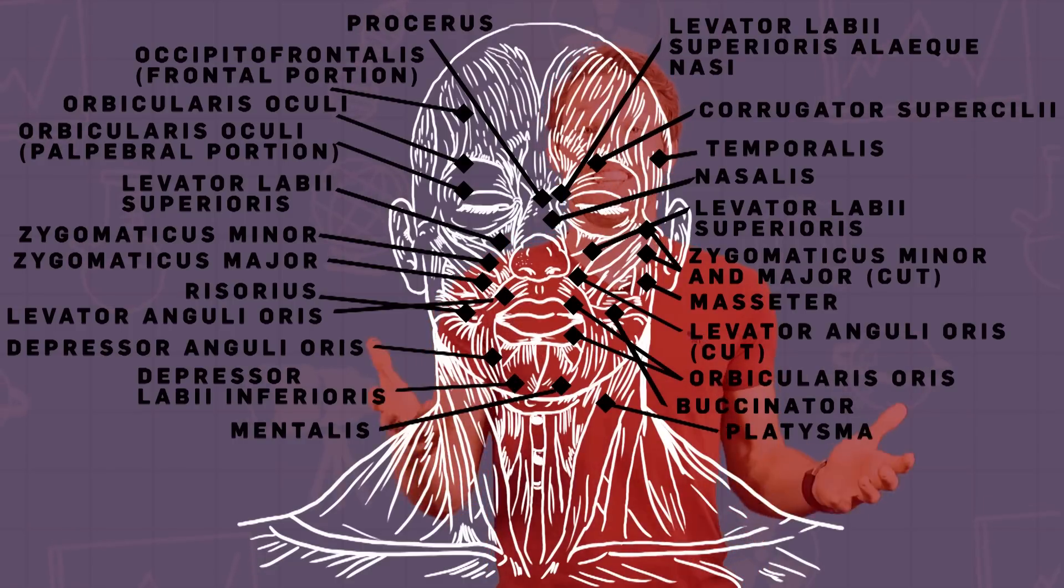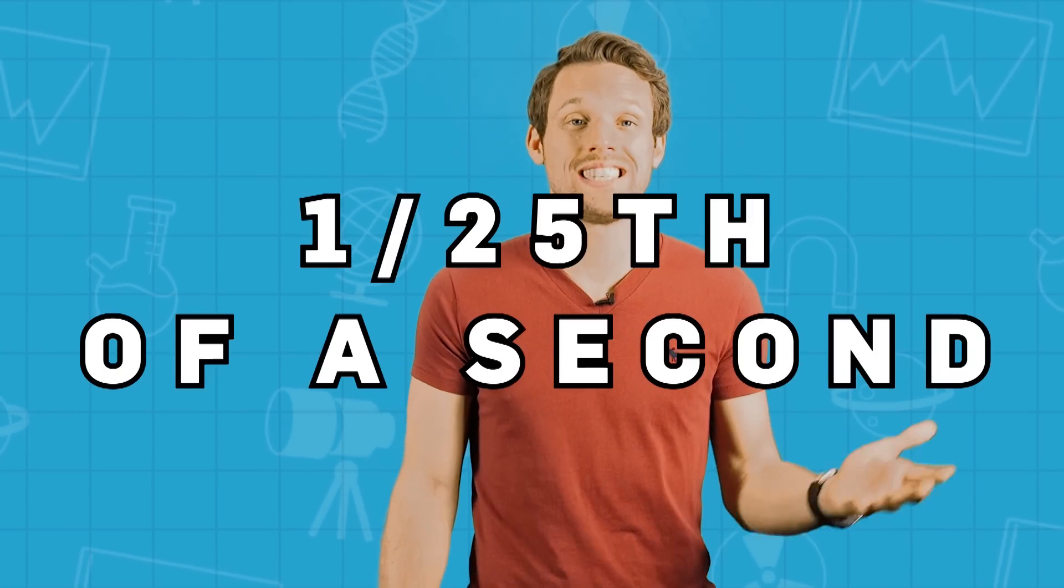But his research has actually led him to working with Pixar Animation Studios and the FBI. All thanks to his theory that lies can be spotted by looking at tiny microexpressions. Ones that last for as little as 1 25th of a second.